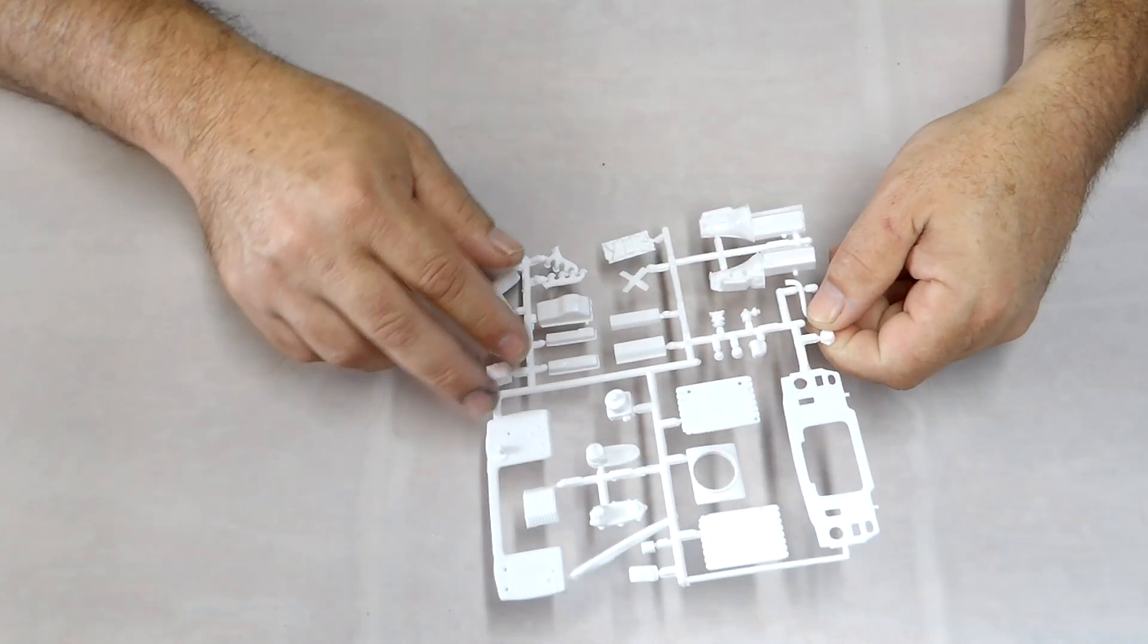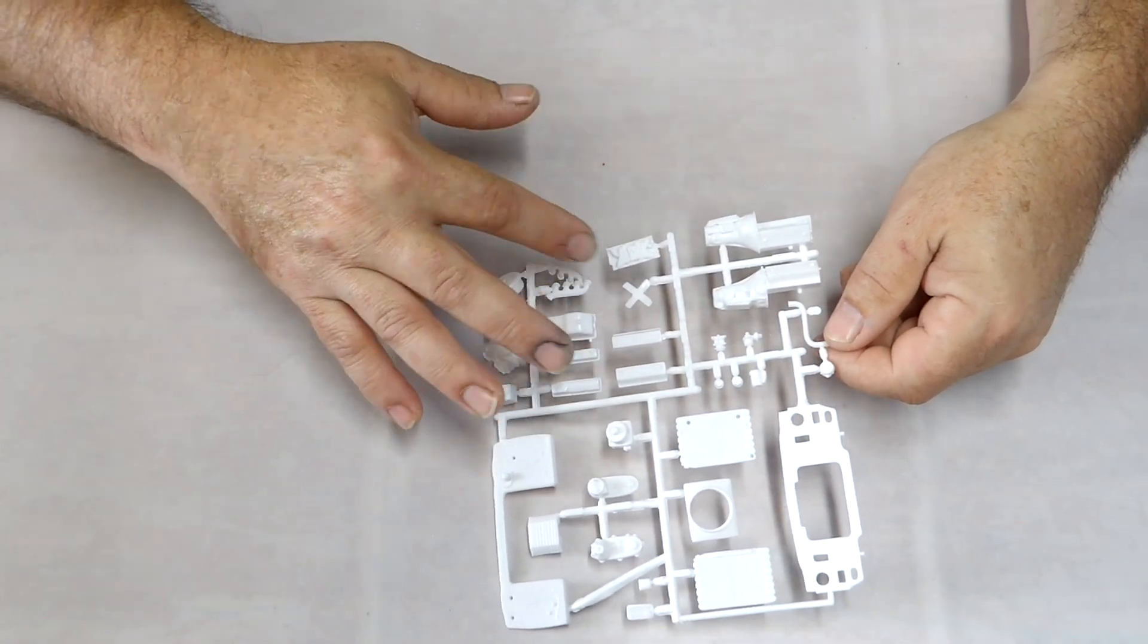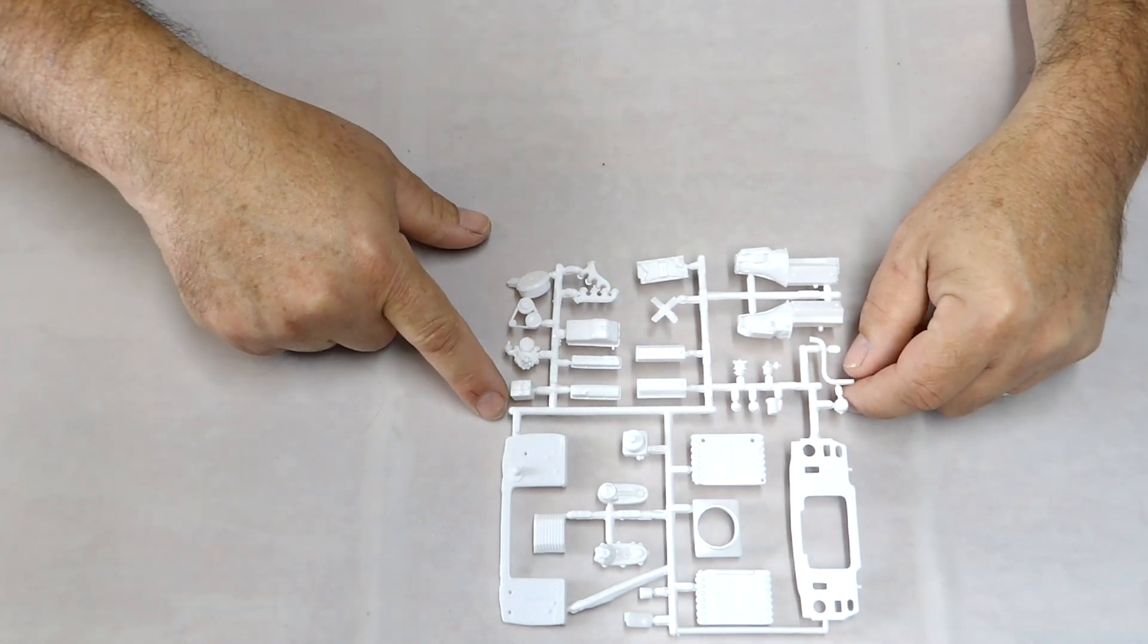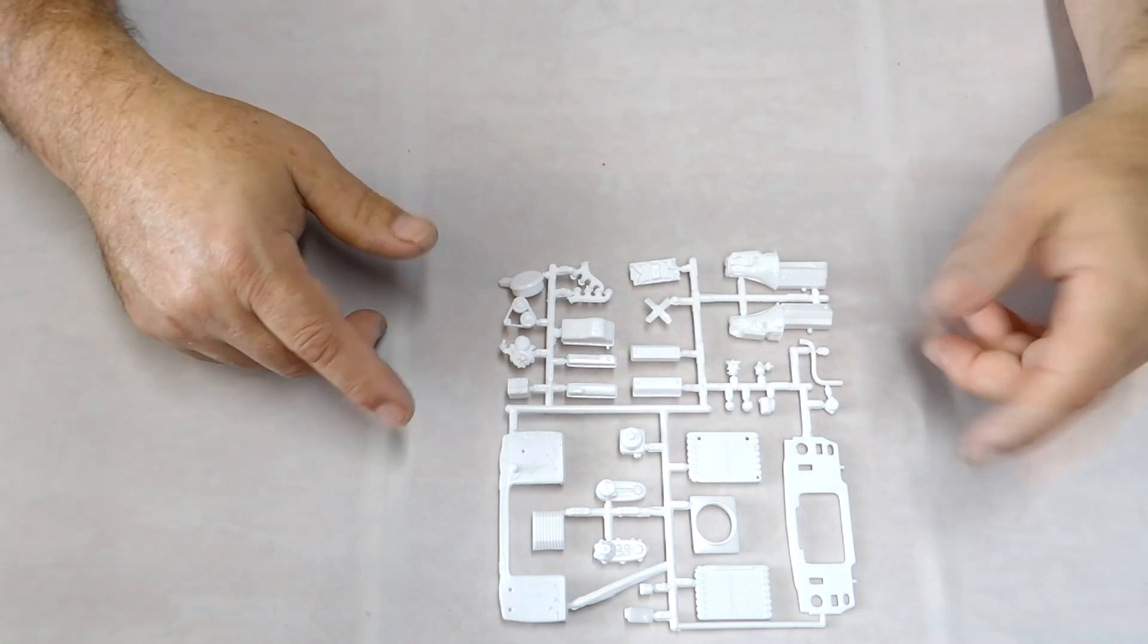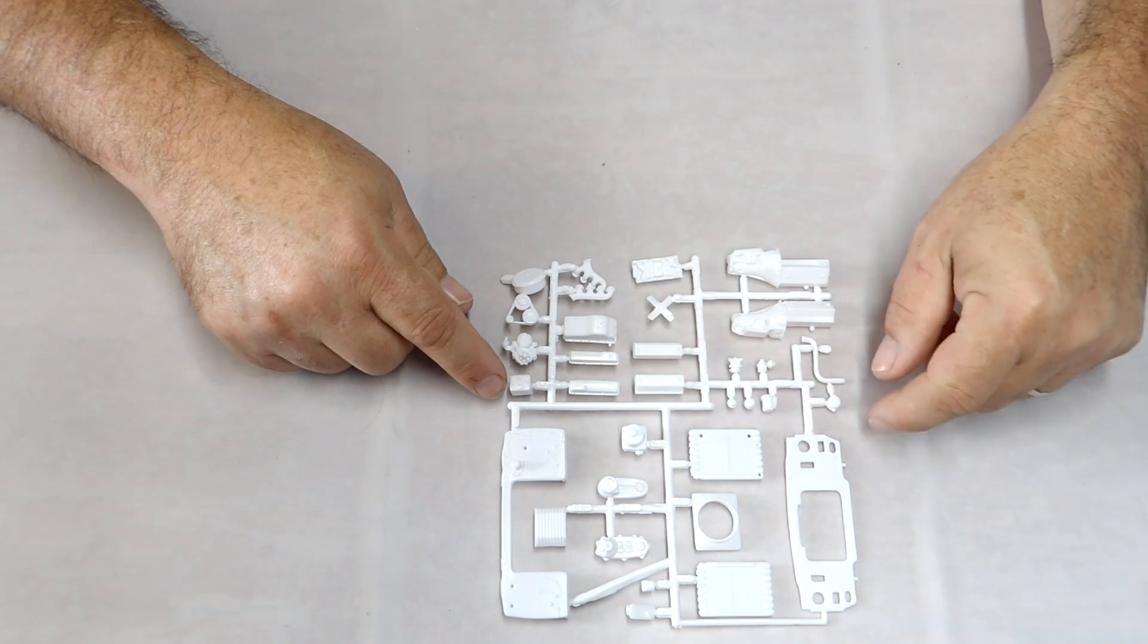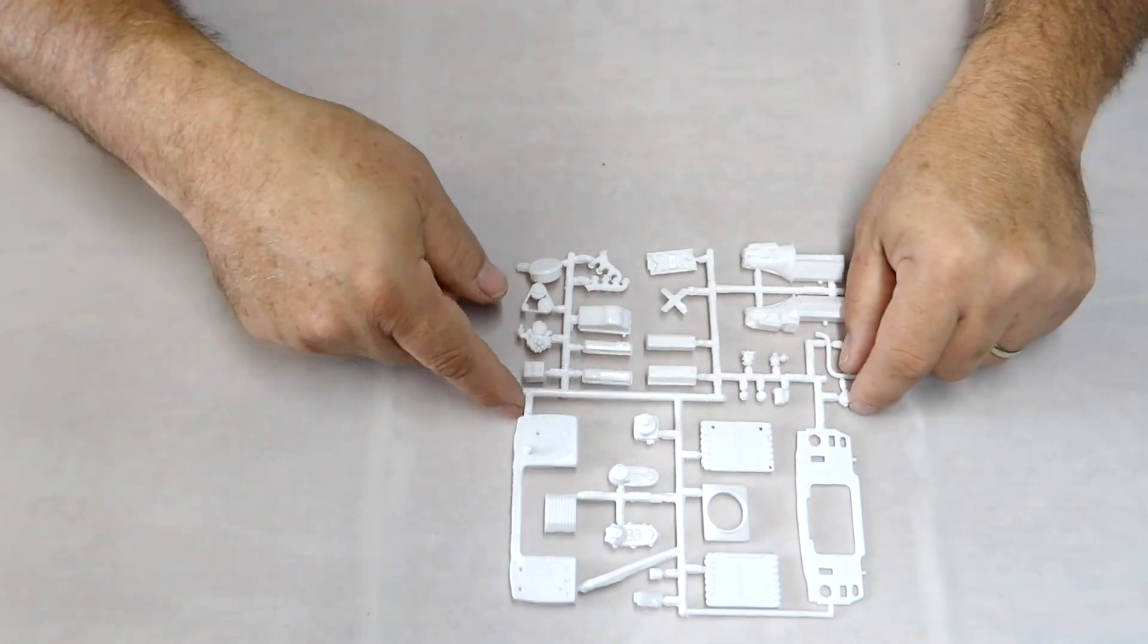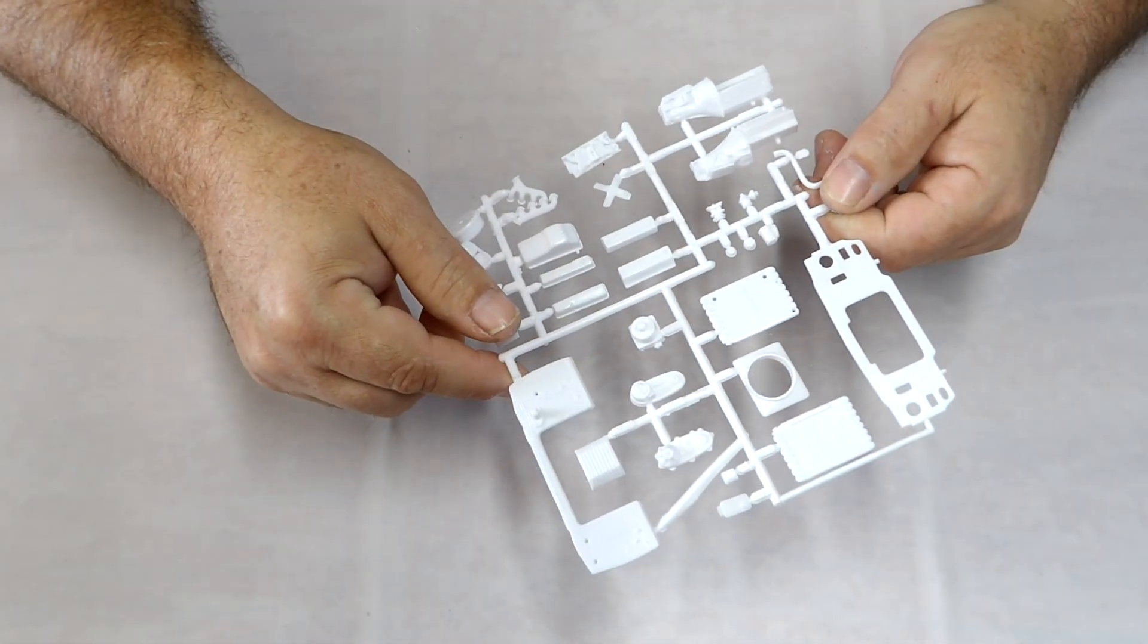Got some heads, valve covers, oil pan, manifolds, intake, fan, air cleaner, belt assembly, timing chain cover, battery. Here's your engine and transmission molded in two pieces. We got a fuel pump on there, starter, oil filter, carburetor. Here's your transfer case and looks like your brake booster maybe.